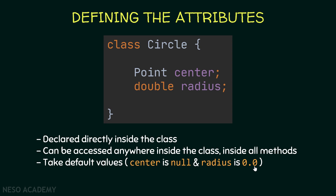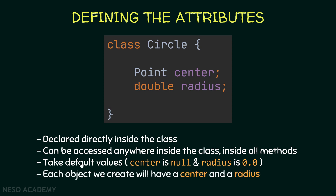Later on we will see how we can assign initial values to our attributes using constructors. Also notice that each object we create using the Circle class will have its own center and its own radius, just like we create different points using the Point class. To define attributes, we simply declare these variables inside the block of code of the class.